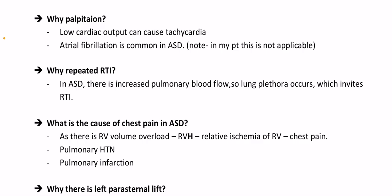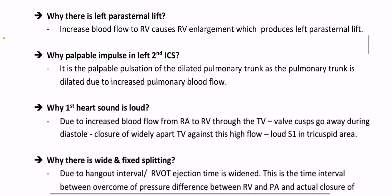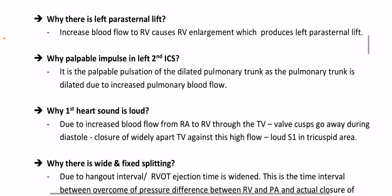What is the cause of chest pain in ASD? Due to RV volume overload, right ventricular hypertrophy with relative ischemia of the RV causes chest pain. Pulmonary hypertension and pulmonary infarction are additional causes. Why is there a left parasternal lift? Increased blood flow to the RV causes RV enlargement, which produces left parasternal lift.